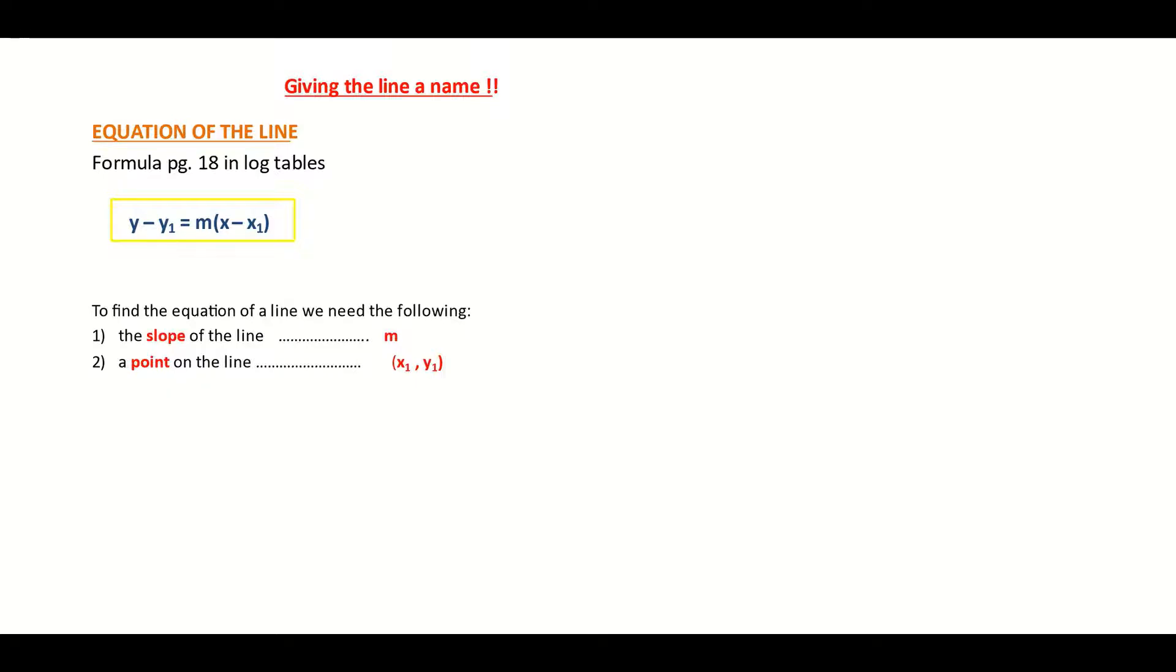All you need to form an equation of a line is one point, x1 and y1, and that's the second thing you need. This x and y will stay in your answer. So to recap, you need a slope and you need a point, just the one point. Let's look at one example.